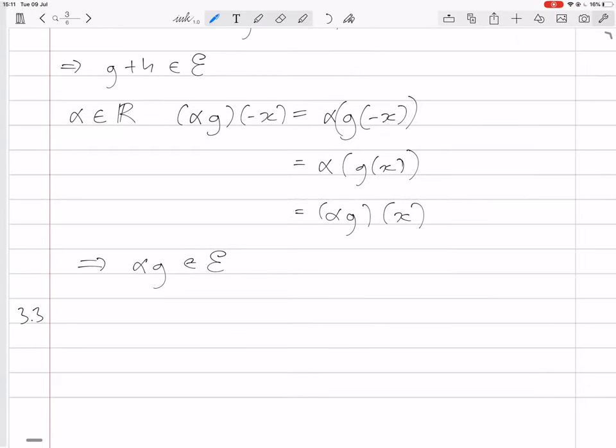So if we take, if we call, we say that g of x equals x is clearly an odd function. And h of x equals 1, constantly 1, that's clearly an even function.